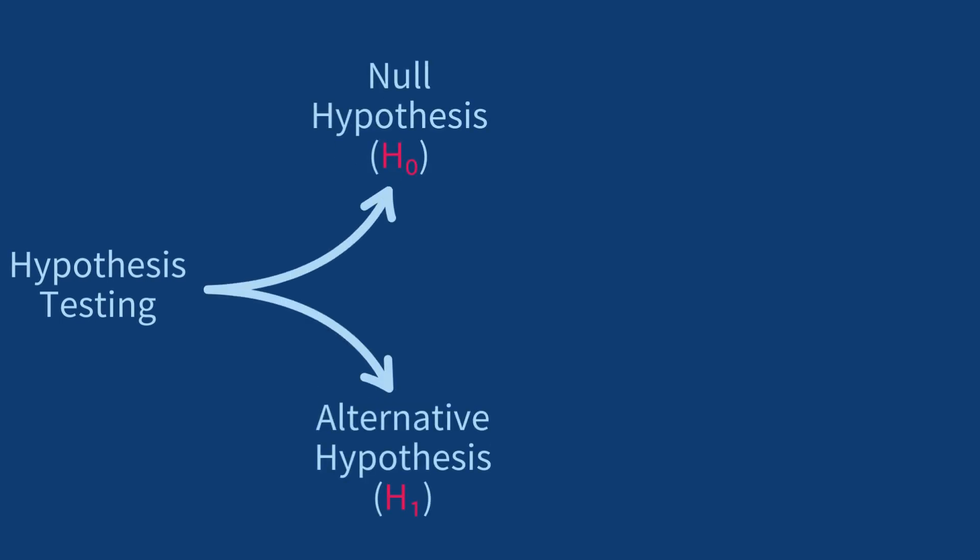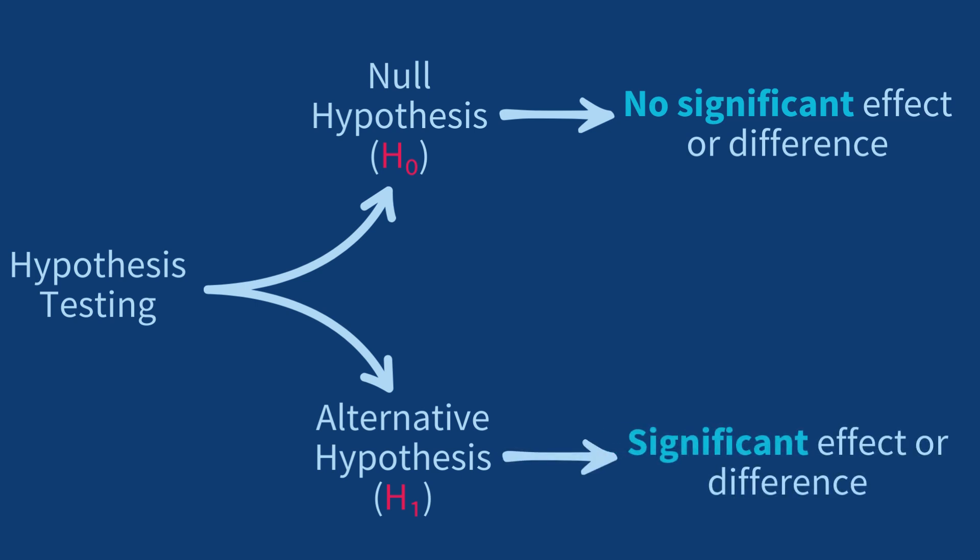In statistical hypothesis testing, we define a null hypothesis and an alternative hypothesis. We then assume the null hypothesis is true and use a probability distribution model to calculate the likelihood of our observed results.